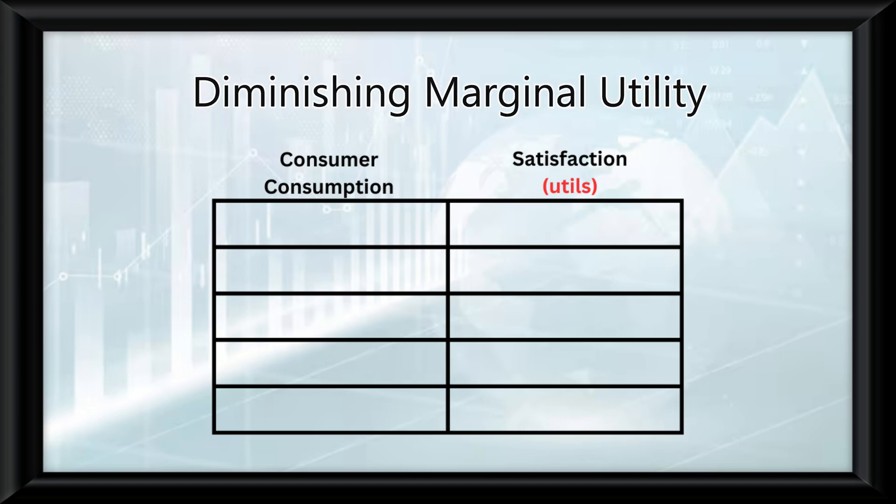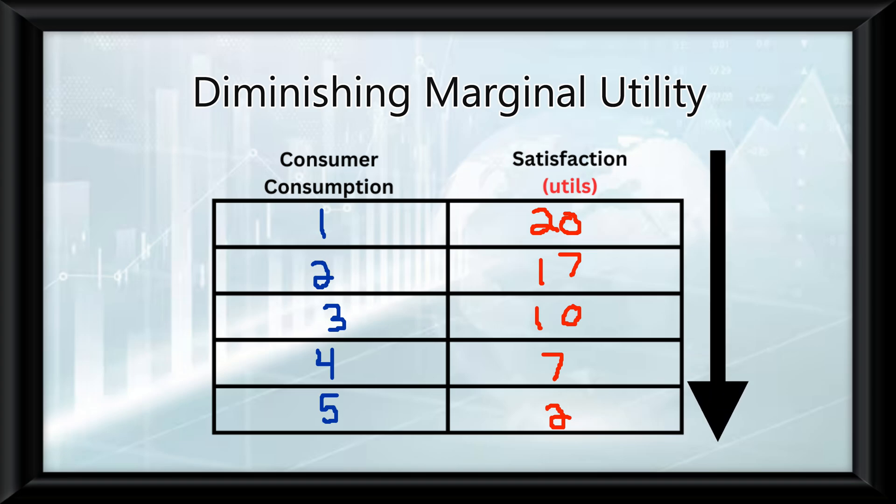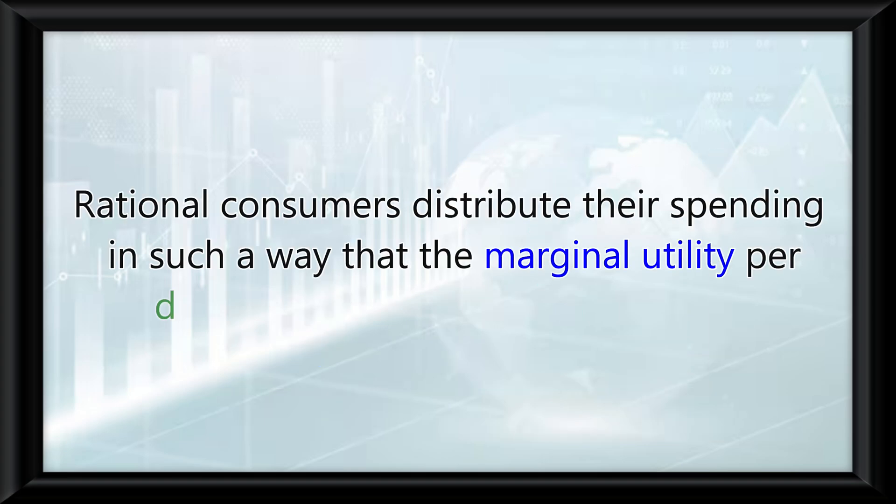Diminishing marginal utility means that as a consumer consumes more of a good, the additional satisfaction they get from each extra unit decreases. Rational consumers distribute their spending in such a way that their marginal utility per dollar spent on each good is equal.